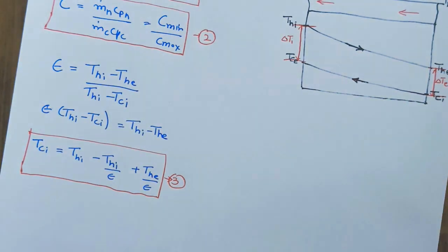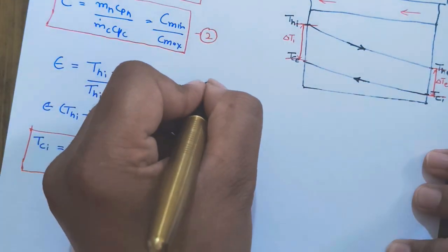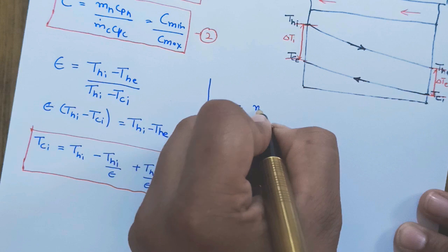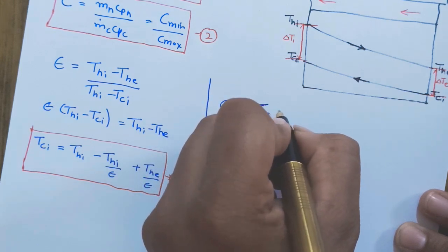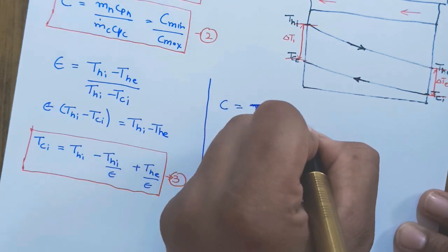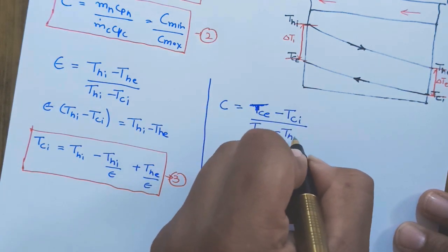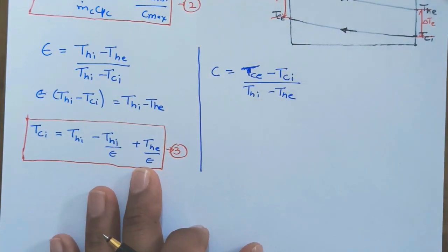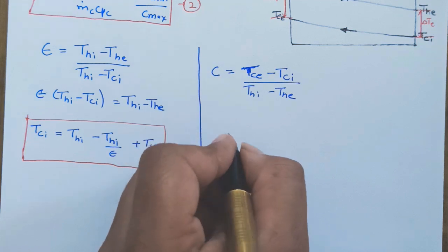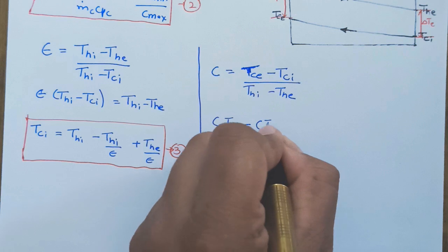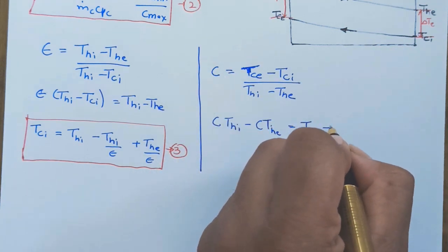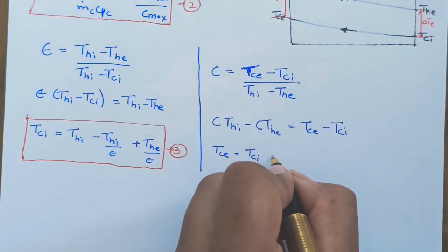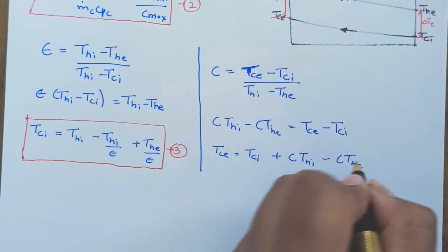And similarly, we will take this equation and we will get C equal to (TCe minus TCi) upon (THi minus THe) from the energy balance equations. So from here, I will get C times (THi minus THe) equals (TCe minus TCi). So TCe will be TCi plus C times (THi minus THe).